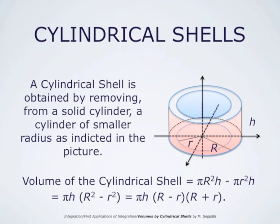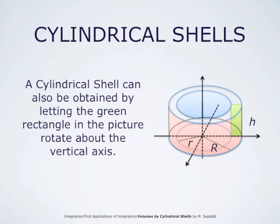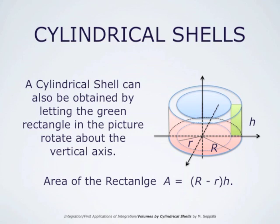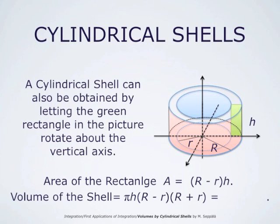In this form, the formula is convenient. We observe that this cylindrical shell can also be obtained by letting this green rectangle in this picture rotate about the vertical axis, forming the cylindrical shell. The area of this green rectangle is base times height, where the base is R minus r and the height is h. Therefore the area A of the rectangle is (R minus r) times h. The volume of the cylindrical shell is pi times h times (R minus r) times (R plus r), which equals 2 times pi times ((R plus r) divided by 2) times A.